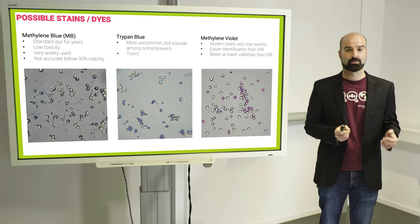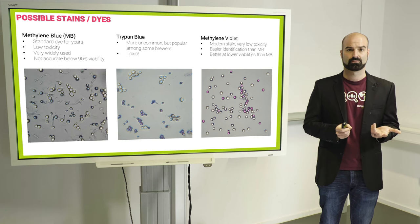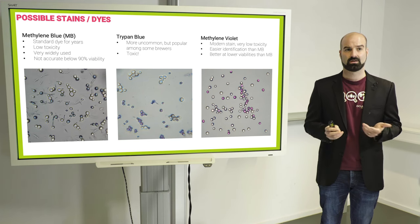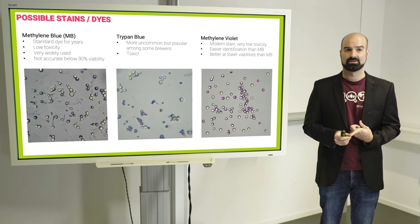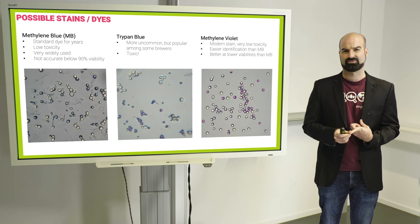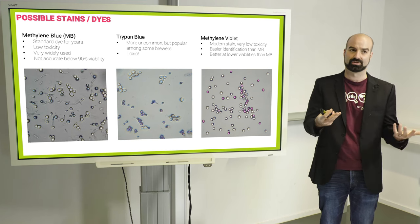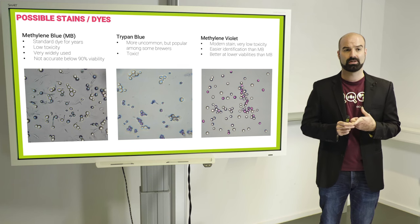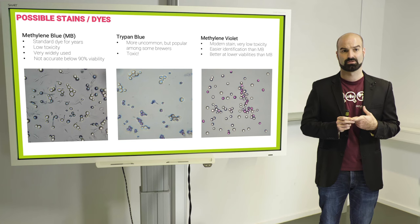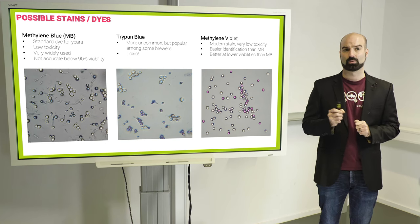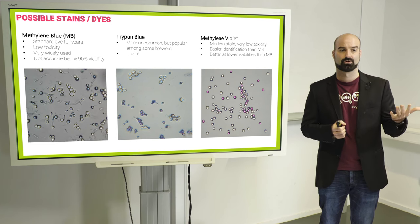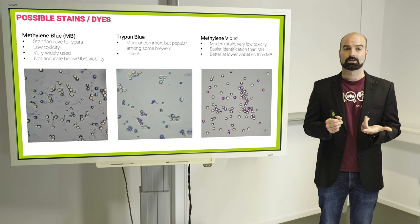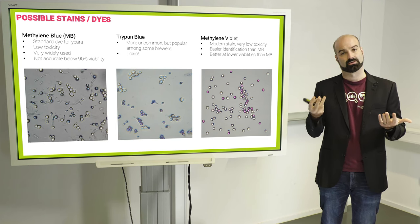There are many stains that can be used. The most common one is methylene blue. Just for historical reasons, it has been the standard stain for a very long time. It is low toxicity. It's not a terrible stain. Its main disadvantage is that it's not great at lower viabilities and it's not very binary. You will get a lot of cells that are like bluish, but not deep blue or transparent. Trypan blue is becoming more popular in some regions. Main disadvantage with it is that it's quite toxic. And the one we would most strongly recommend is methylene violet, which is like a modern version of methylene blue. It works better at lower viabilities, it's also very low toxicity and you get a very binary staining.